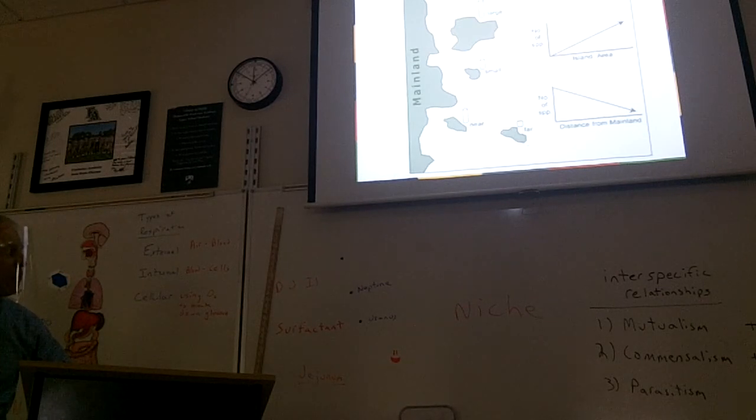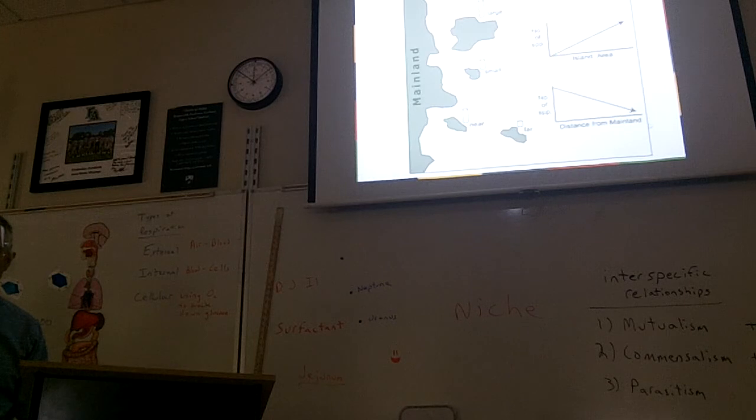An island far from the mainland will tend to have fewer species than an island near the mainland. If you're far from the mainland, it's hard for new species to get to the island. If you're near the mainland, it's easier for species to get to the island. So the number of species is inversely related to the distance from the mainland. The farther you get from the mainland, the fewer the number of species. We call that an inverse relationship. When you see the arrow going up, it's called a direct relationship. When it goes down, it's called an inverse relationship.